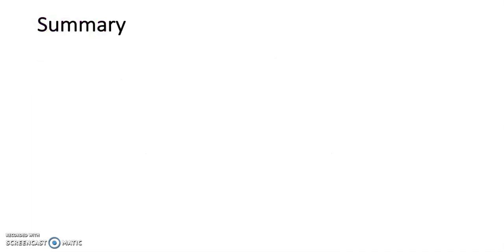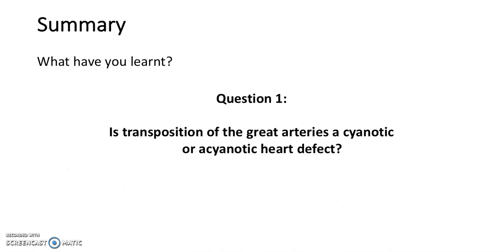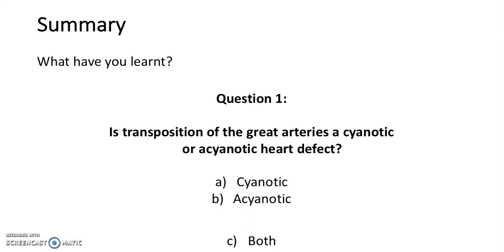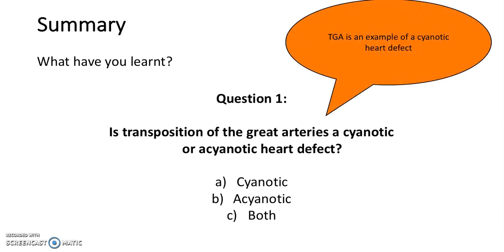Let's go back over the multiple choice questions to see whether we've learnt anything. Question 1: Is transposition of the great arteries a cyanotic or acyanotic heart defect? A, cyanotic; B, acyanotic; C, both. The answer is A, cyanotic.